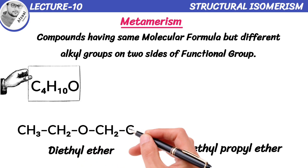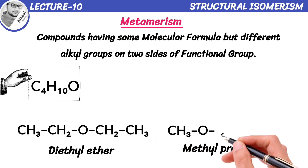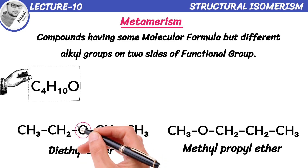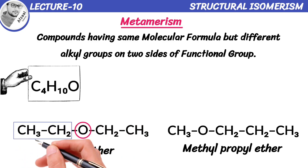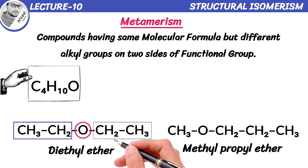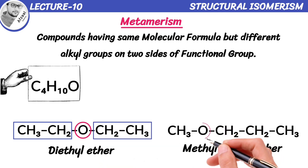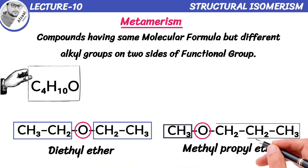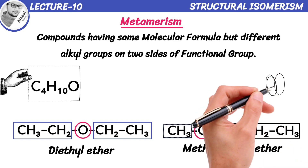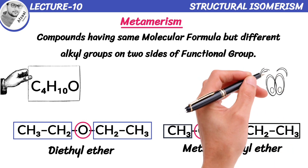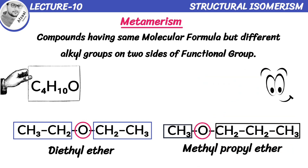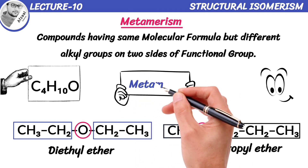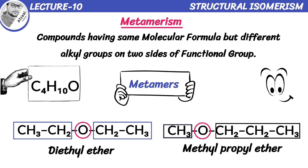However, their structures are a bit different. Diethyl ether has an oxygen atom as a functional group sandwiched between two ethyl groups, while methylpropyl ether has an oxygen atom between a methyl group and a propyl group. So visually they might look similar, but their arrangement of atoms are different on either side of the functional group. That's why they are known as metamers of ethers.